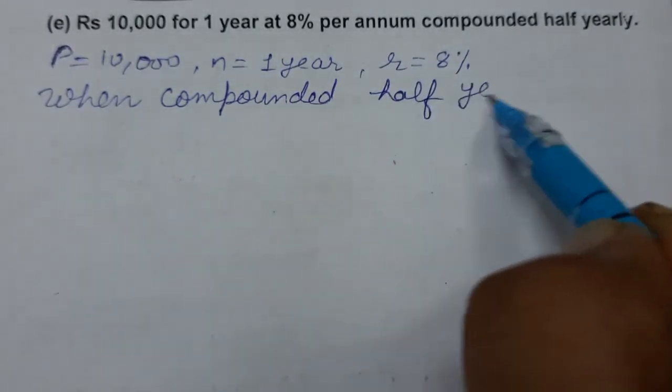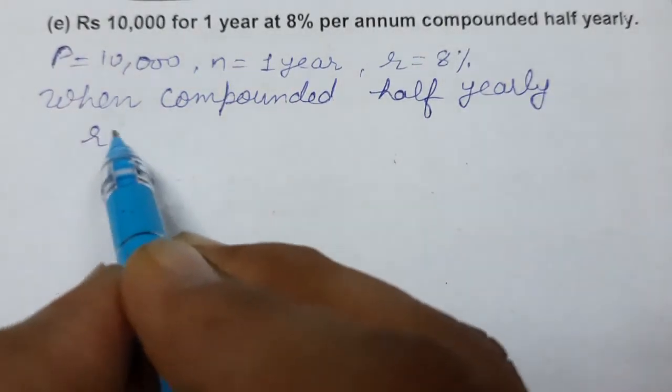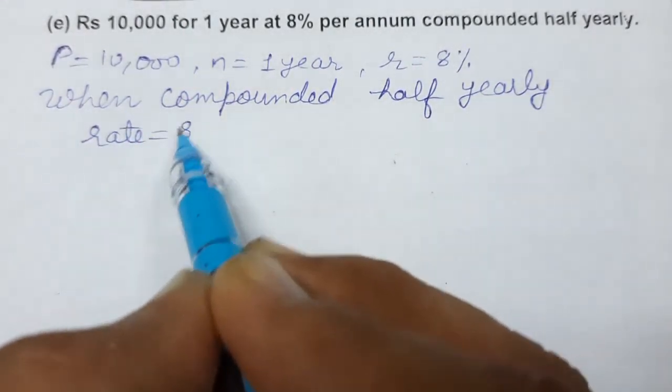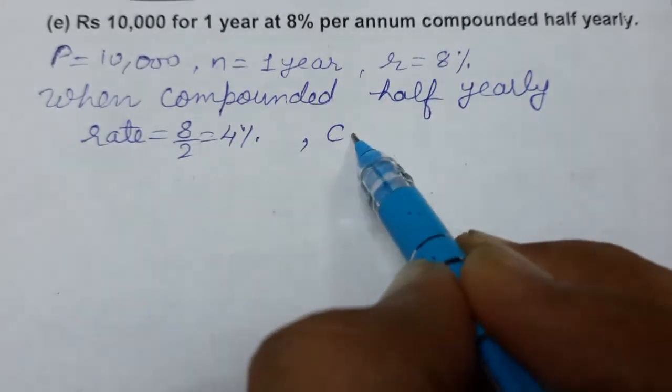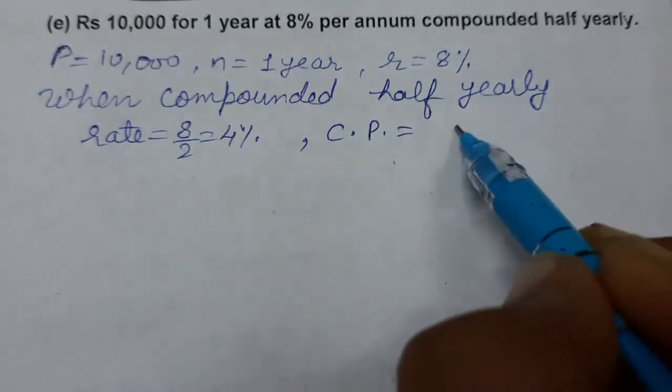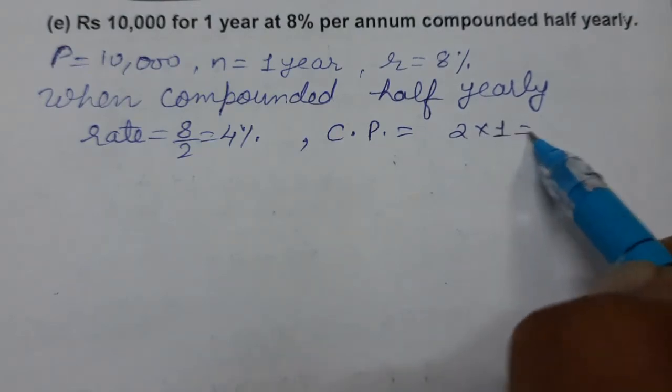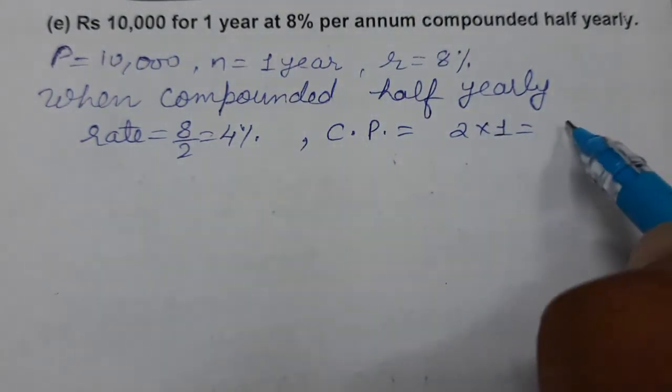Rate equals 8 divided by 2 equals 4%. And conversion periods becomes 2 times, or 2 into 1. How many six months are there in one year? So two six-month periods or two conversion periods are there.